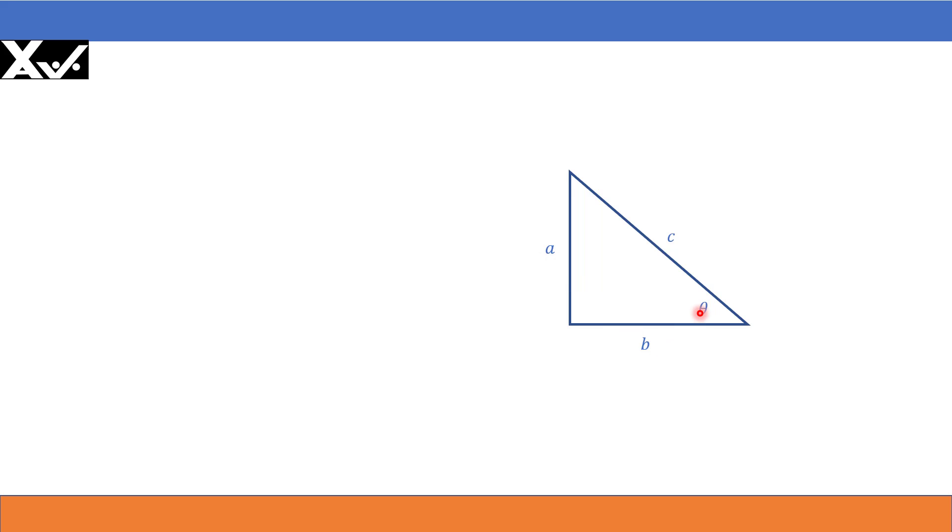Theta is an acute angle. It will always be less than 90 degrees because the total sum of the angles is 180 degrees and 90 degrees is this angle. Therefore, the sum of the other two angles is 90 degrees. Therefore, each angle should be less than 90.